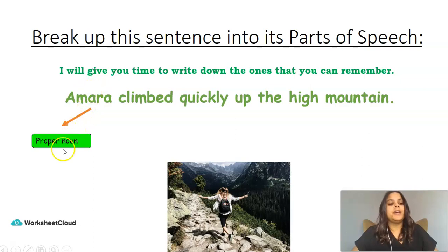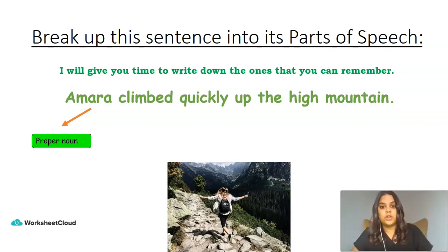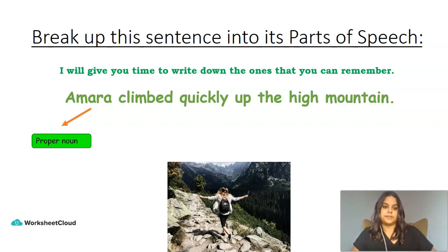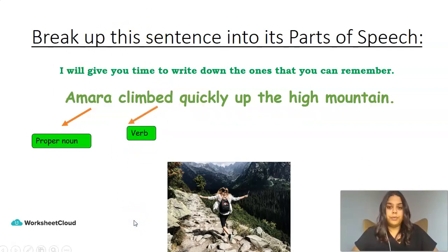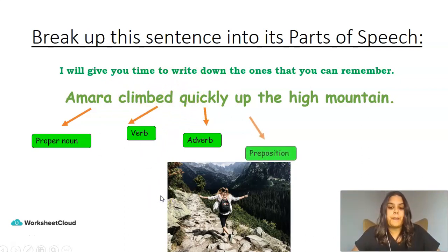So the first word is Amara, and Amara is a proper noun. If you wrote just 'noun,' that's fine as well, because in the beginning we focused on a blanket noun for all naming words. But if you went further and wrote 'proper noun,' great. Climbed is a verb — it's a doing word, basically telling us the action of the sentence. Quickly is an adverb — the adverb 'quickly' is telling me more about the verb 'climbed.'